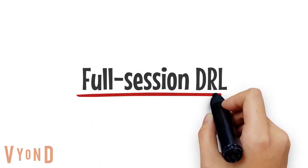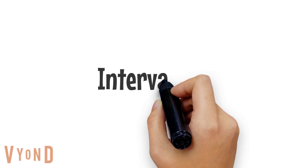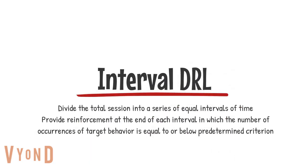For a full session DRL, reinforcement is delivered at the end of the session if the target behavior occurred equal to or fewer times than a predetermined criterion. For example, if a student blurted out 10 times in a session, I would reinforce them if they blurted out 9 times or fewer during the whole class period. Interval DRL is similar, except the class session is divided into smaller intervals, and at the end of each interval, if they meet the criterion, they are reinforced.